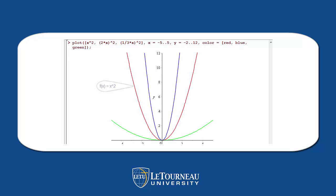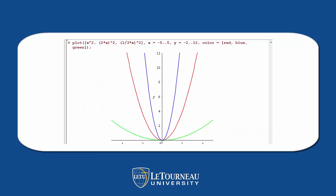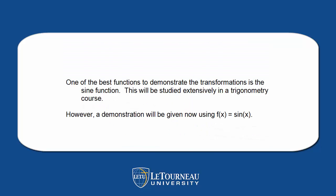Remember, red is x squared. Look what happens when we do 2x and then square it, and when we do one-third of x and then square it.